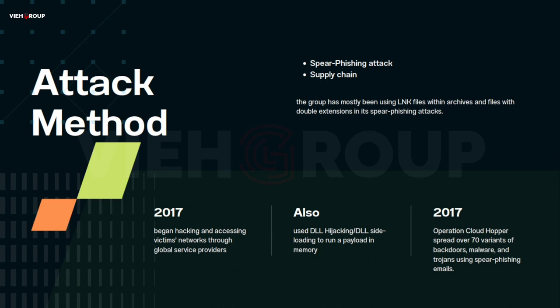According to Mandiant, in 2017 APT10 began hacking and accessing victims' networks through global service providers via sophisticated supply chain attacks. Service providers typically have significant access to customer networks, allowing the attacker to move laterally inside a compromised network and infect more systems. Additionally, the group is known to use DLL hijacking and DLL side-loading to run payloads in memory, and process hollowing to replace code in an executable file with malicious code.